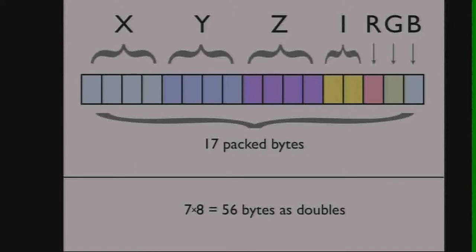The goal of LiDAR storage is to keep everything small because there's so much data. We pack the data into a byte array, and for each dimension we use as few bytes as possible to represent each value. For example, a packed point with X, Y, Z, intensity, R, G, and B values fits into just 17 bytes. If you stored that same data using doubles for each value, you'd have 56. Even the fairly simple trick of packing things into bytes saves you a lot of space.